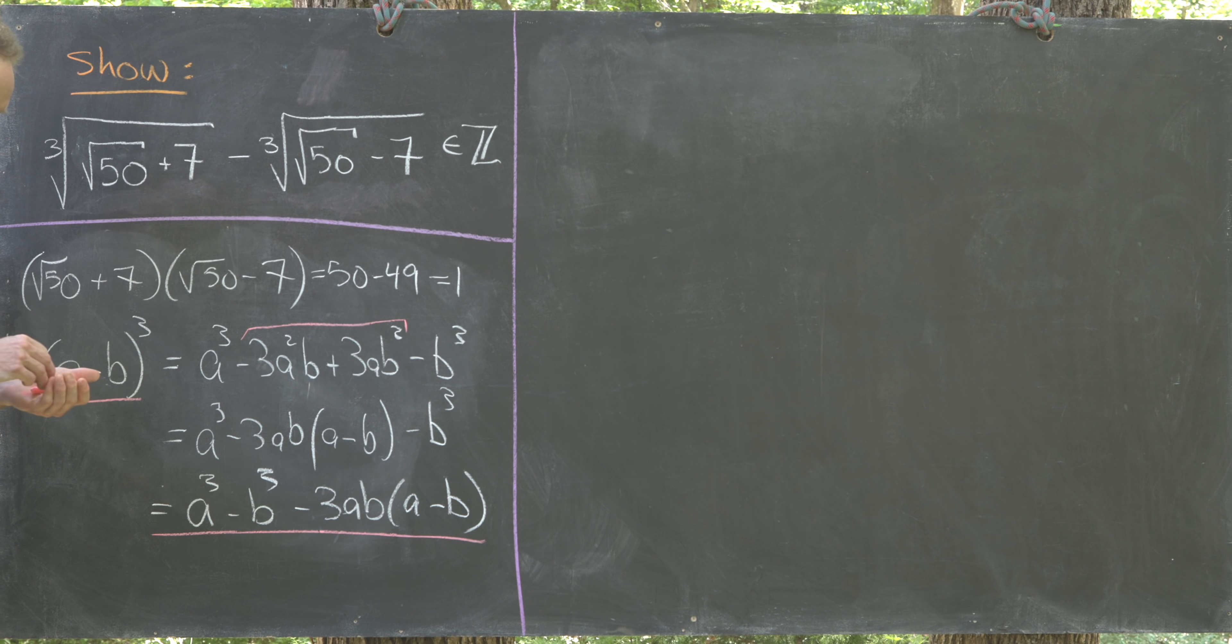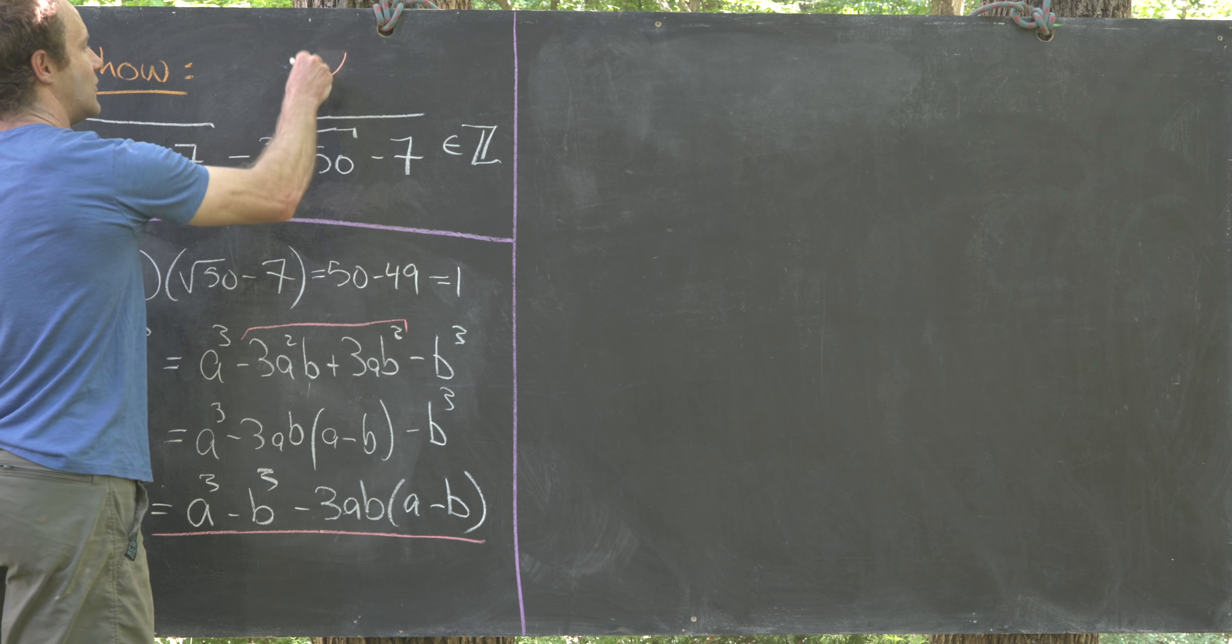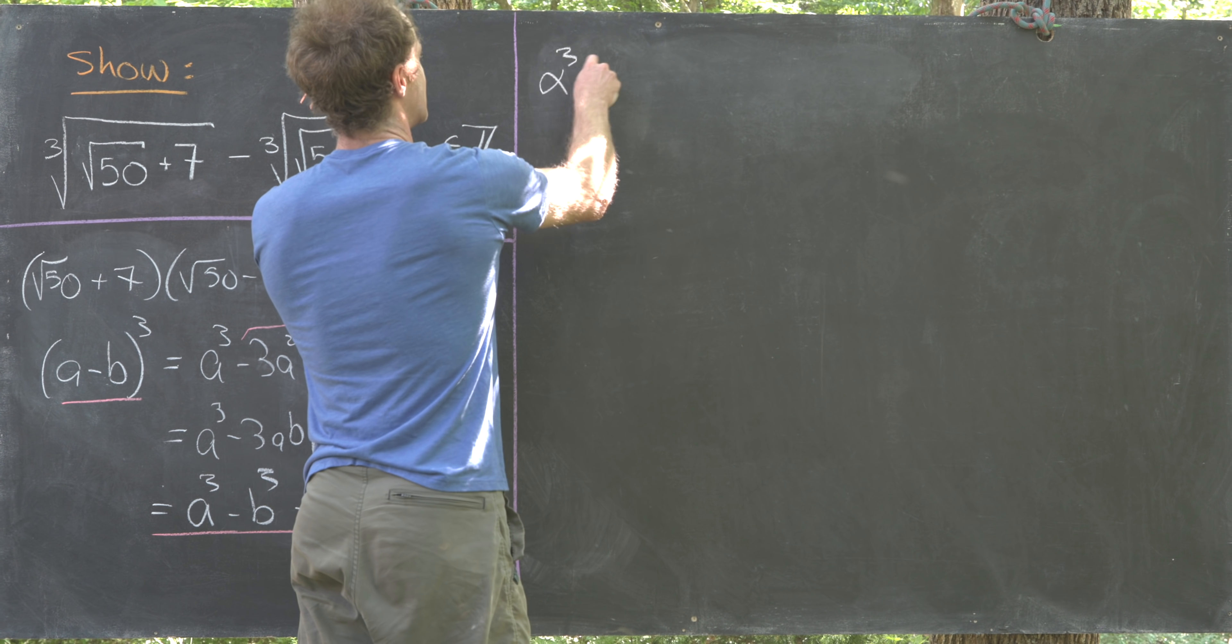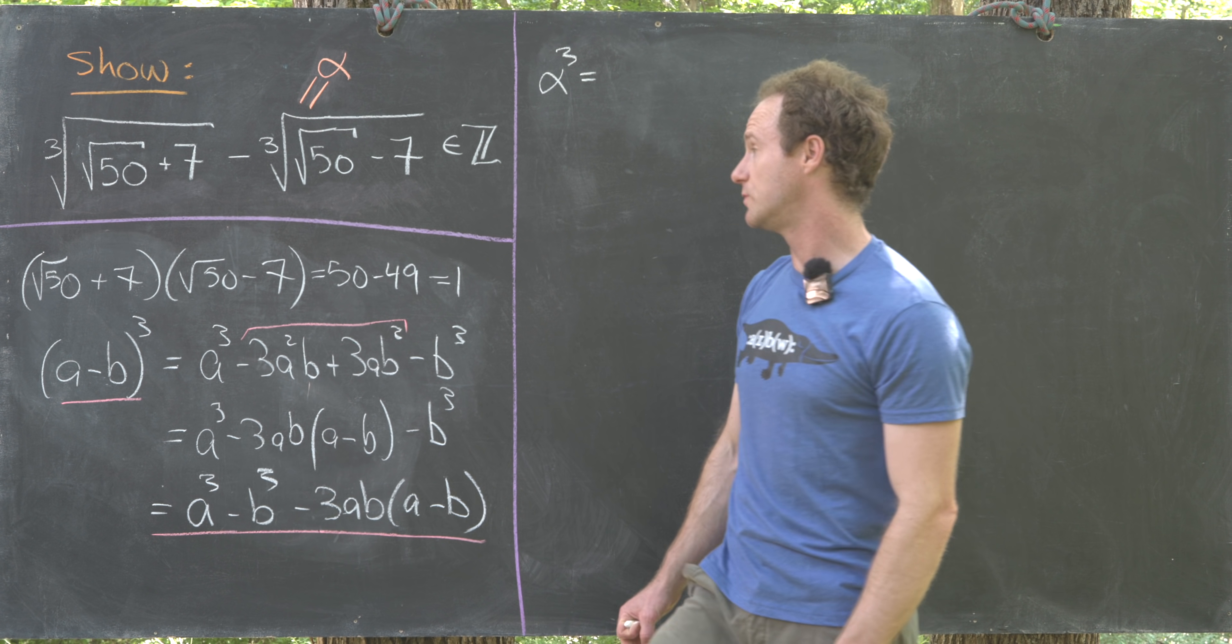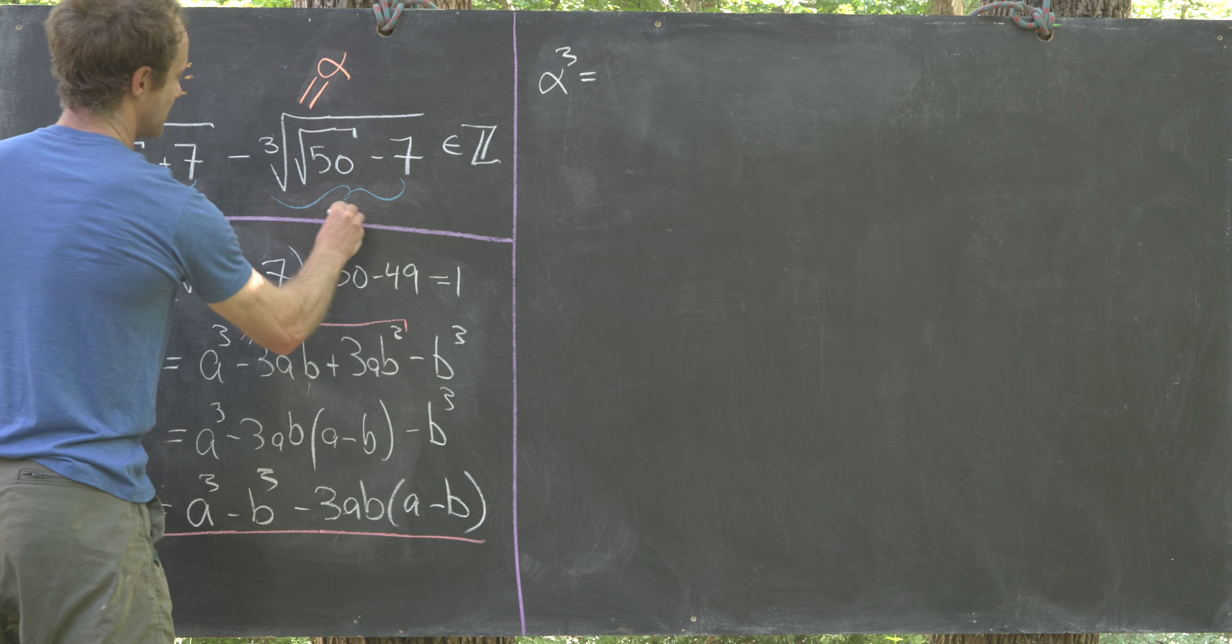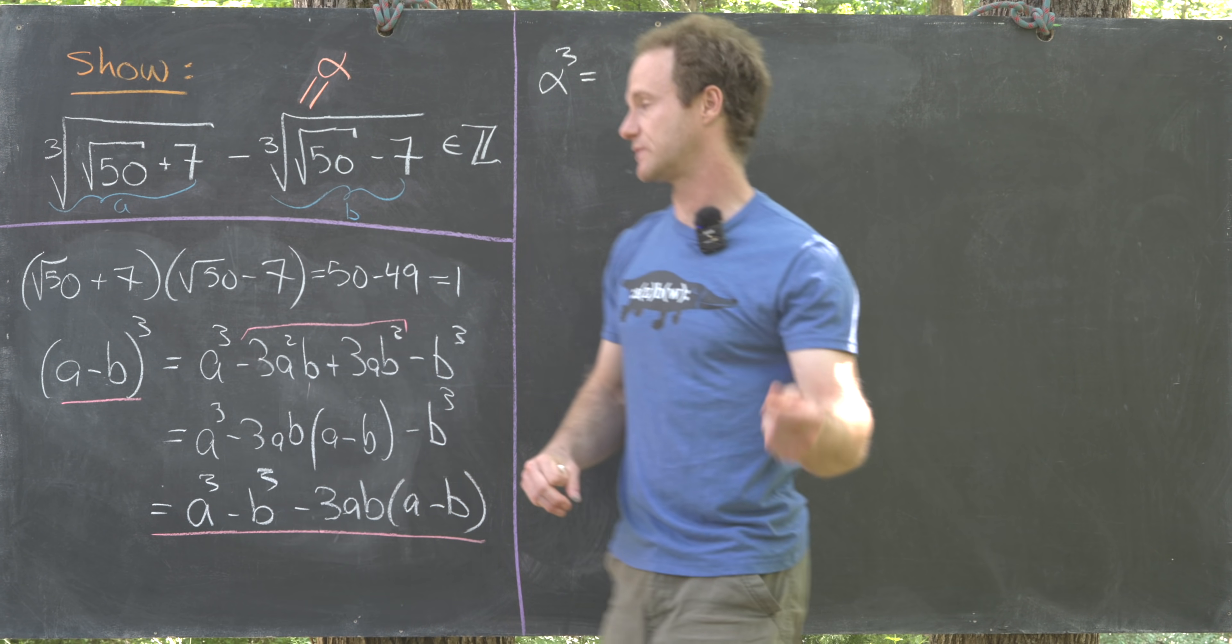Now let's take our number in question and introduce some notation. I'll call this number alpha, and since I've got cube roots here I probably want to cube alpha and see what happens. If I take alpha cubed and use our binomial cubed formula, thinking about this whole thing being a and this whole thing being b, we can make a nice simplification.